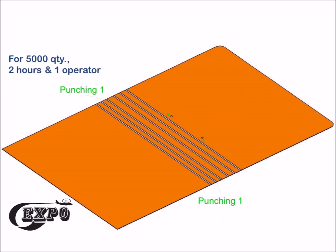Punching machine is required to perform the punching one operation on the files which approximately takes two hours and one operator.